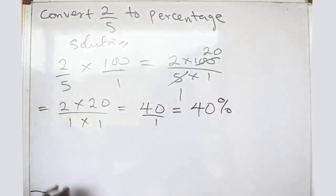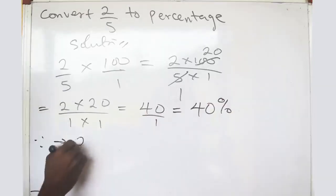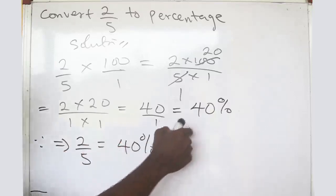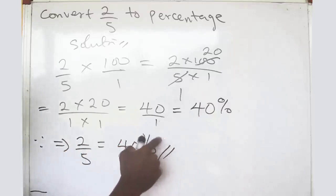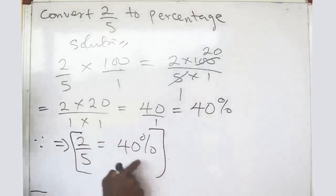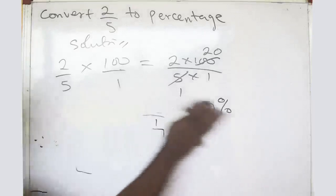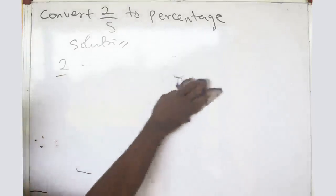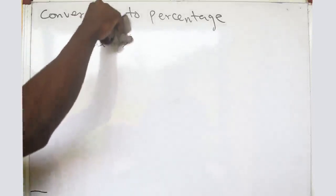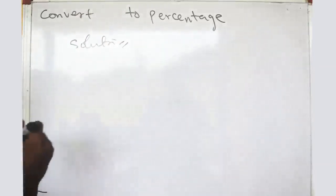So the answer is forty percent. This simply implies that two over five is the same as forty percent. You find out that this fraction is equal to forty percent — there is virtually no big deal to this.